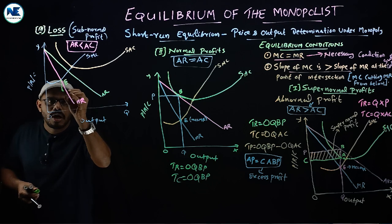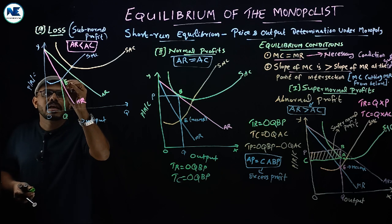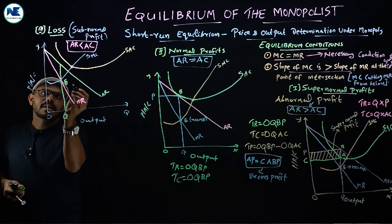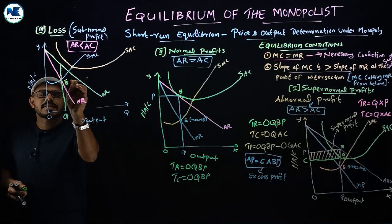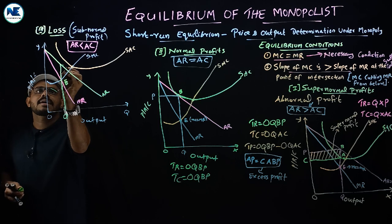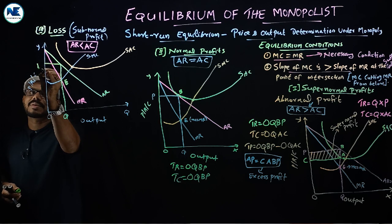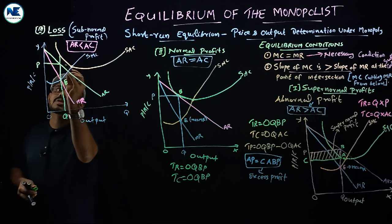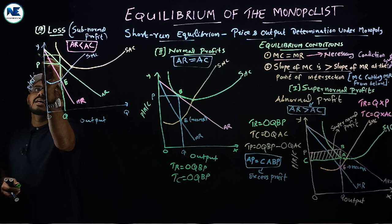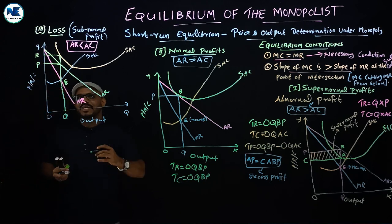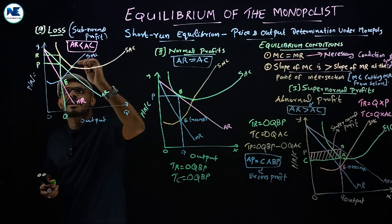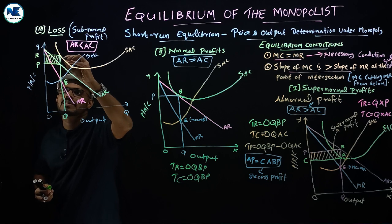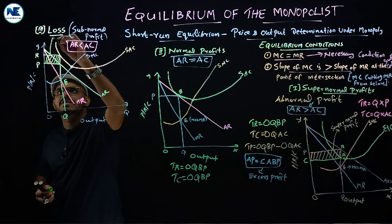From the equilibrium output Q, you go up to the average revenue curve to find the price. You also go to the average cost curve to find the average cost. The average cost is greater than the average revenue at this output level. This shaded area represents the total loss.